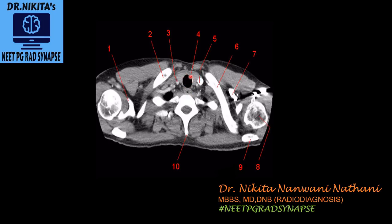In the center, the black rounded structure is the trachea — it is black because it contains air. Surrounding the trachea anteriorly is the thyroid gland, which appears hyperdense on plain CT because it contains iodine. Adjacent to the thyroid, the smaller white dot (structure three) is the common carotid artery — specifically the right common carotid artery. Structure five, the larger vessel adjacent to the thyroid, is the internal jugular vein, with the common carotid artery medial to it.